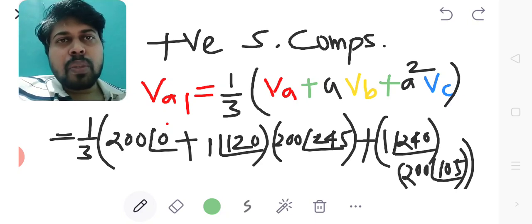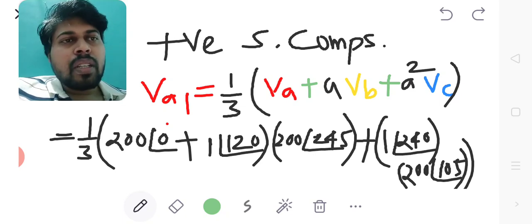To find the positive sequence component, VA1 equals 1/3 times (VA + A×VB + A²×VC). Substituting all the values given here, I will get